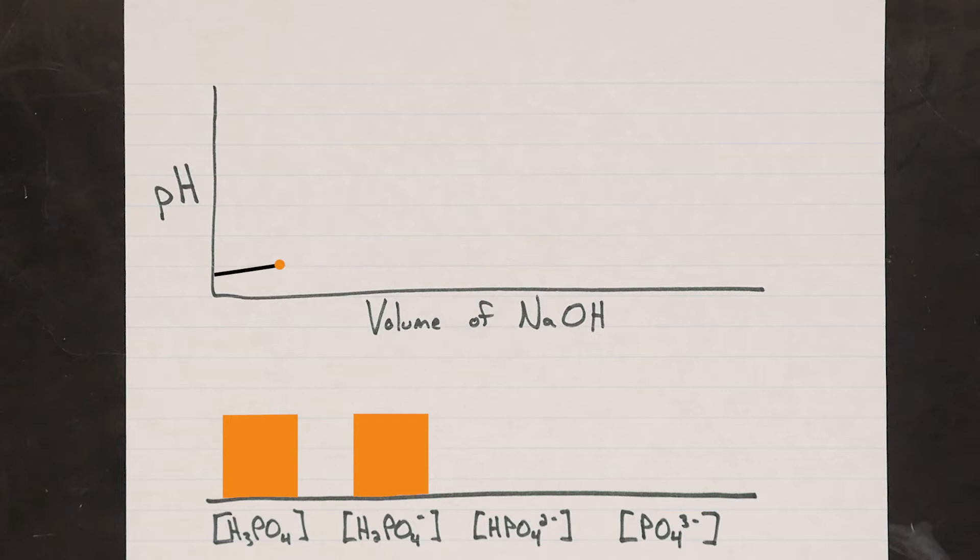But let's keep going. The pH isn't changing much here because we've created a buffer. This solution has molecules of both conjugate acid and base available, and therefore can absorb other acids and bases pretty effectively. This region of the curve is generally referred to as the buffer region.